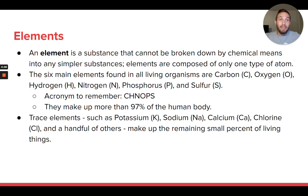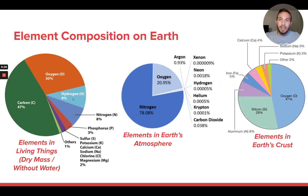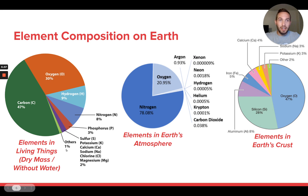Beyond those six, there are many more elements found in living things in very small amounts — we call them trace elements. A few examples are potassium, sodium, calcium, and chlorine. All of these are important because you need all of them to be a functioning living organism. Here are some pie charts breaking down the elemental composition of different things on Earth. If you look at living things, we're mostly carbon — which is why you may have heard the term 'carbon-based life forms.'